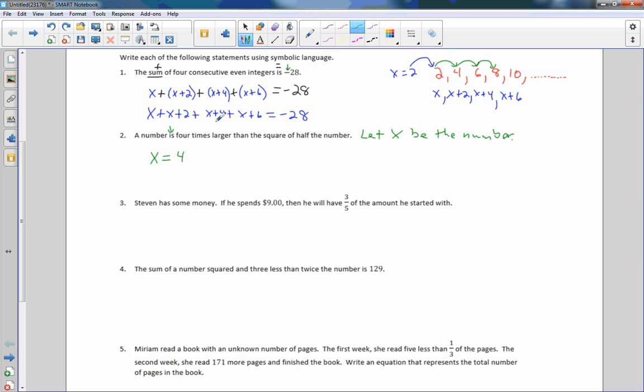So four times larger would be four. Anyway, we're going larger in this one. Four times larger is four times larger than, so I'd multiply four times larger than the square of half the number. So if I take that number and divide it by two, that's half the number. Where x is the number, half of x is x divided by two, and if I square that, then I multiply it by four. That's what this is saying. A number is four times larger than the square of half that number. So there is my expression. That one was a little tricky.